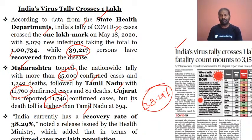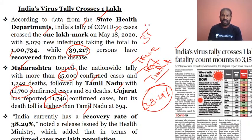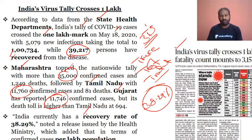Still, we need to go ahead with more testing. We have to follow the three T's — tracing, testing, and treatment — very seriously. Through this we can ensure that recovered cases will increase well beyond 39,000. The recovery rate of 38.29% is measured in terms of confirmed cases per lakh population.